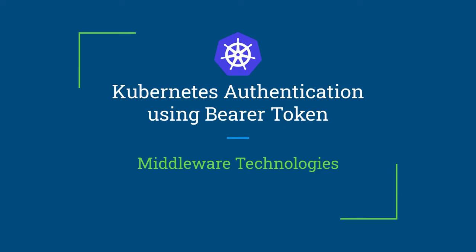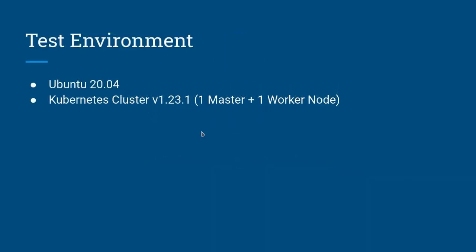Hello everyone, welcome to my channel Middleware Technologies. Today we'll be looking at how to authenticate with the Kubernetes API server using a bearer token. I'm working on Ubuntu 20.04 with Kubernetes cluster 1.2.23.1 installed. I have one master and one worker node installed in my environment.